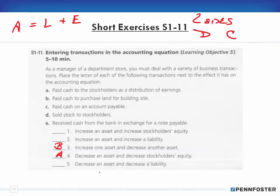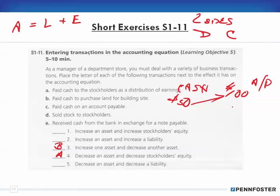Transaction C: paid cash on an accounts payable. Paying cash decreases your asset. And since you're lowering your accounts payable — say from $100 down by $50 — you're reducing your debt. That means a decrease in an asset and a decrease in a liability — category C.